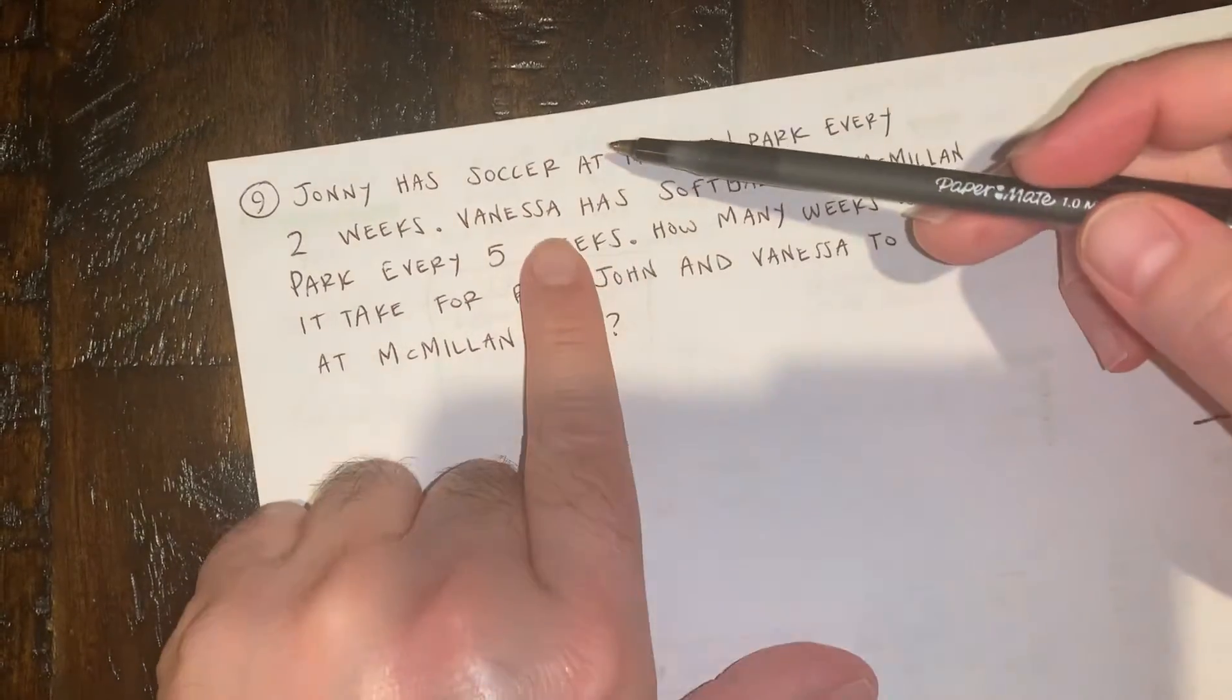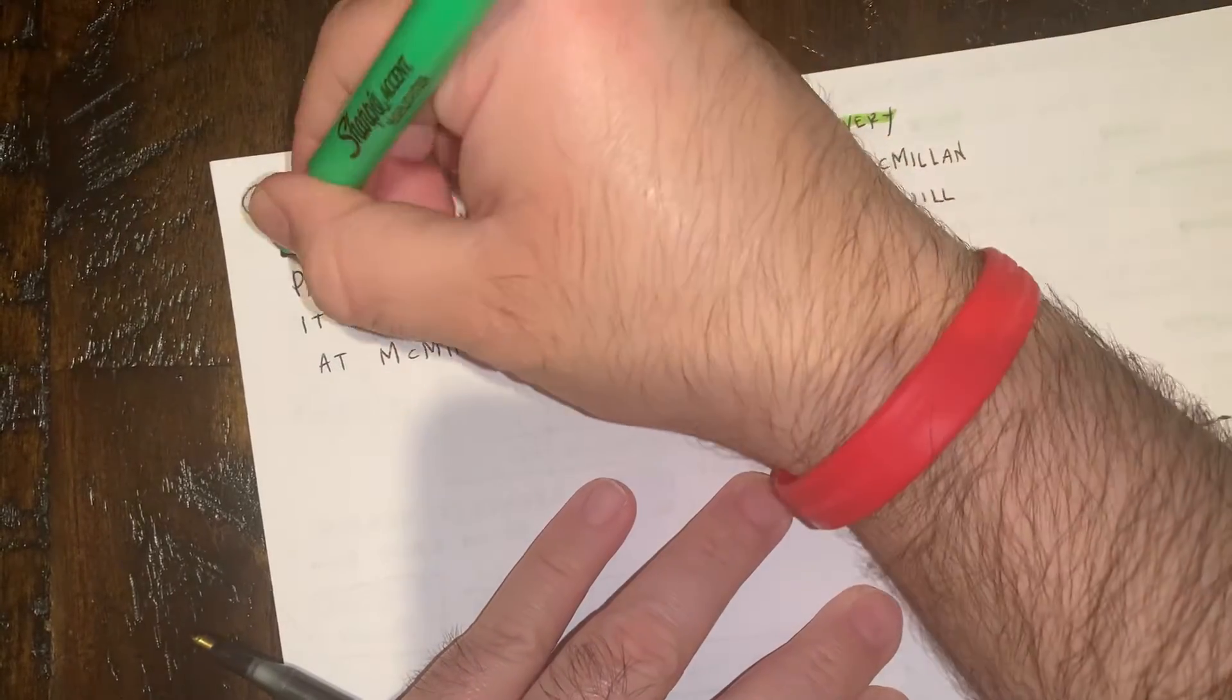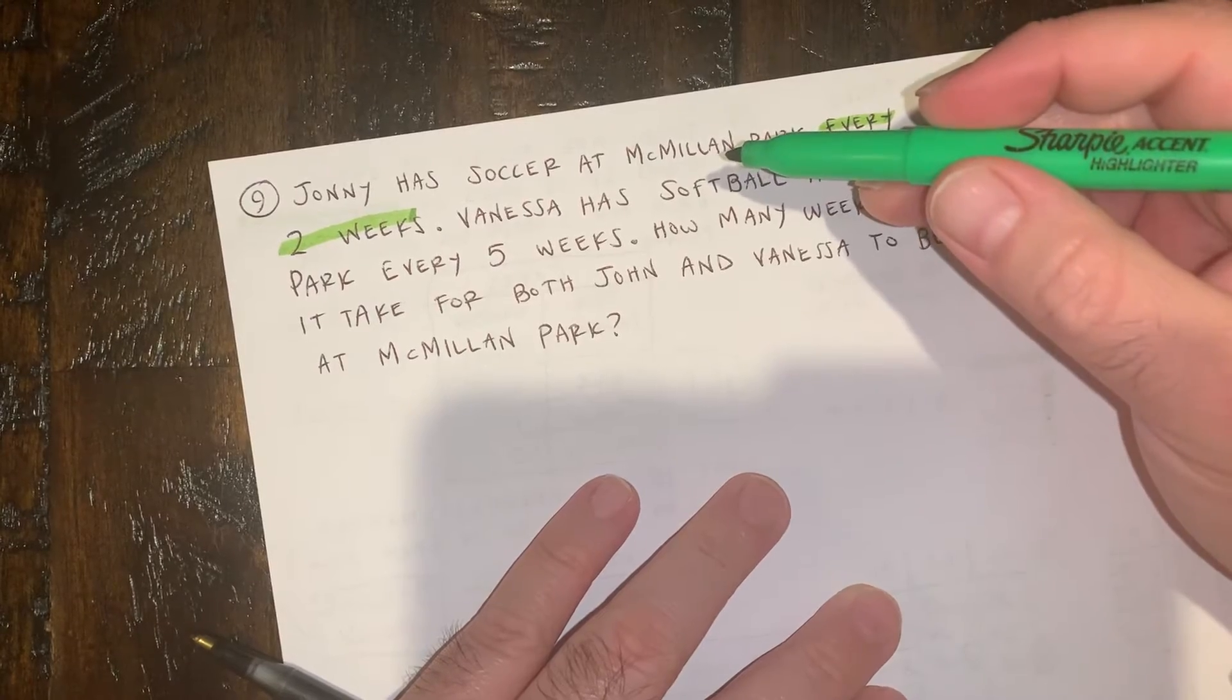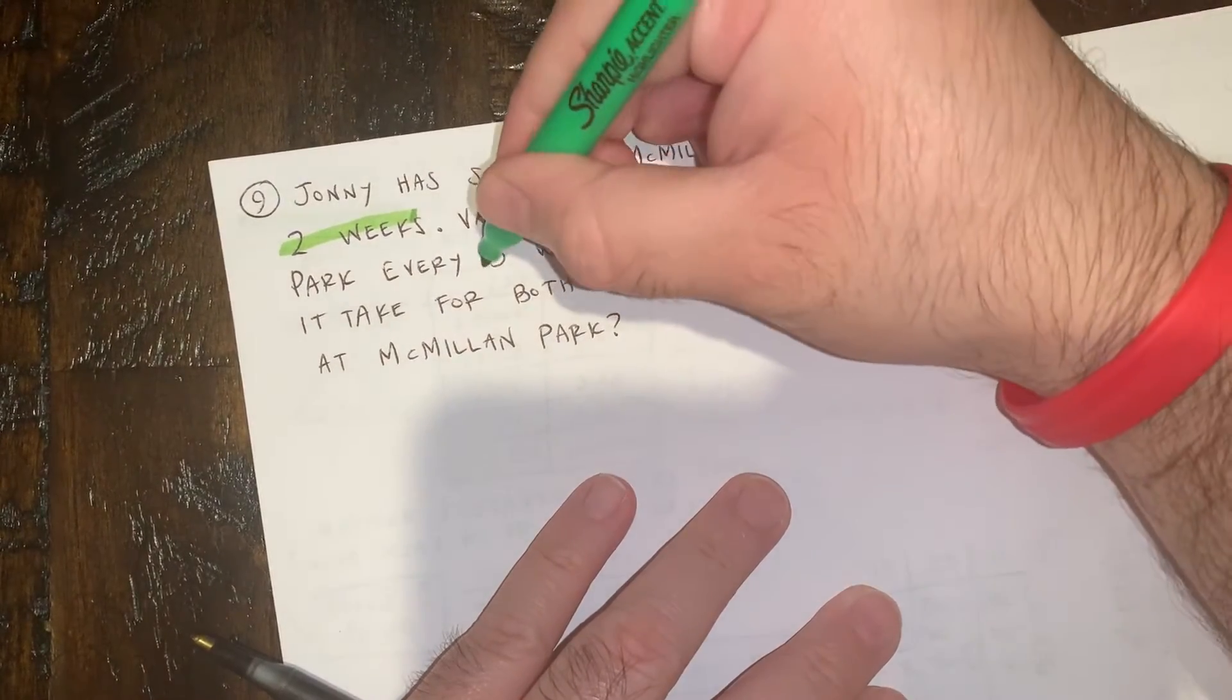So Johnny has soccer at Macmillan Park every two weeks. So Johnny's playing soccer and he goes to Macmillan Park every two weeks. Vanessa has softball at Macmillan Park every five weeks.